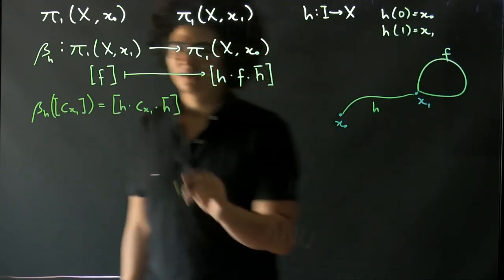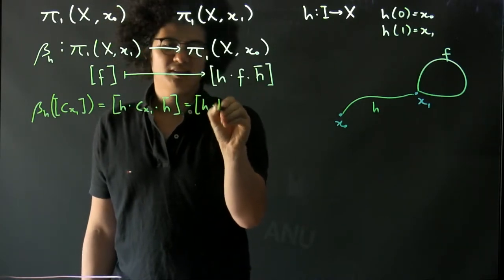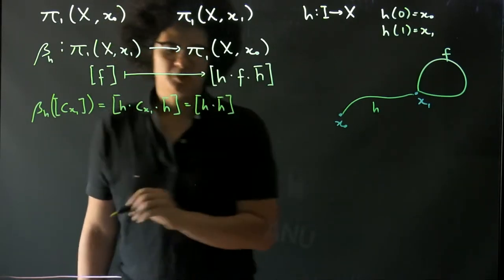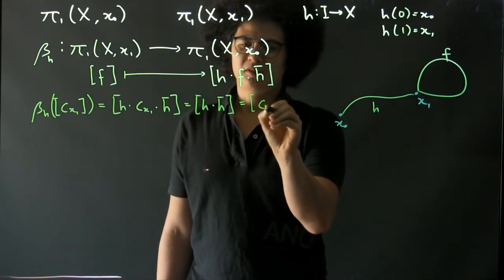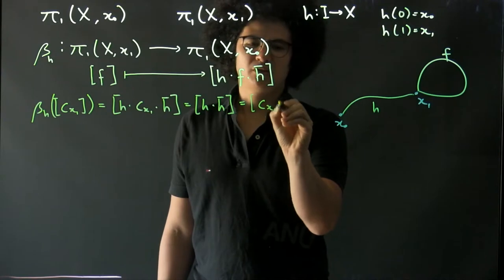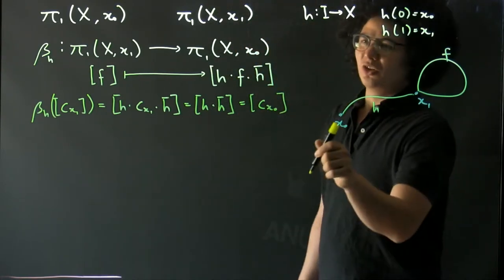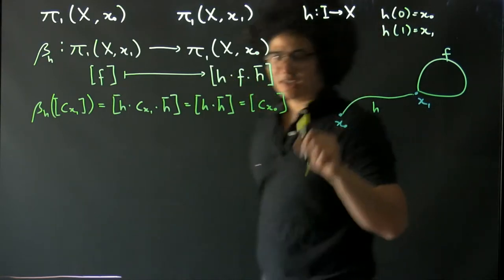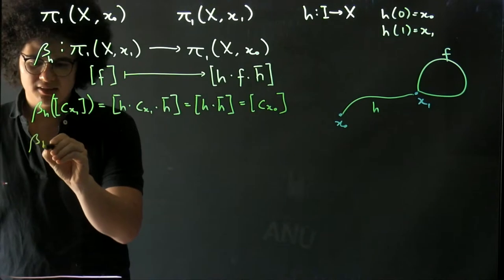Note that I'm not bracketing or putting parentheses in here anymore because we've shown that this operation is associative. But this is just h h bar, which is homotopic to the constant path at x₀, which is the identity in this group. So it sends identity to identity.